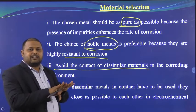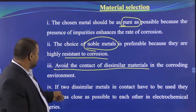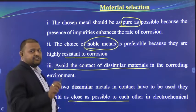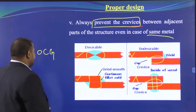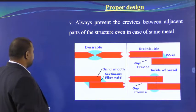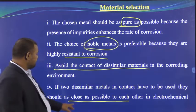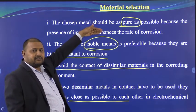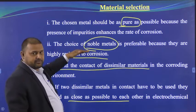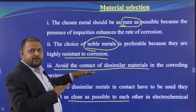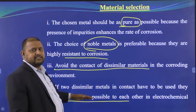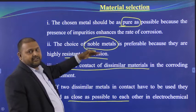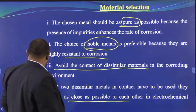Third, avoid contact between dissimilar metals. If you join two different metals, one automatically acts as anode and the other as cathode. If joining dissimilar metals is unavoidable, they should be as close as possible in the galvanic series — for example, brass and bronze — rather than far apart, like brass and gold, which would cause rapid corrosion.